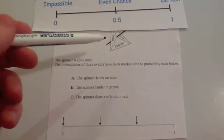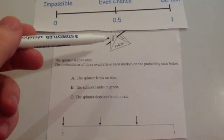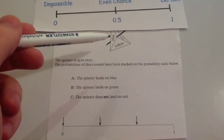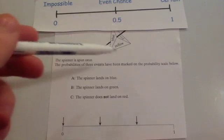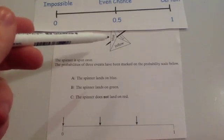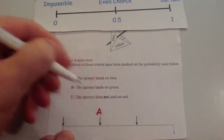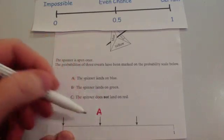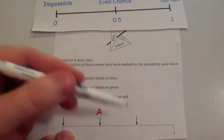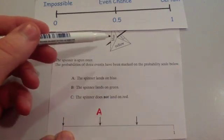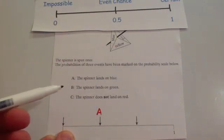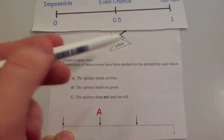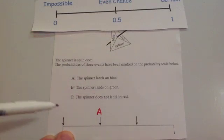The probability of landing on blue — there are three sections and blue is one of them, so the probability is 1 out of 3, or one third. One third is below 0.5, so it's unlikely. So A (lands on blue) is unlikely. B is the spinner landing on green — there's no green on the spinner, so that's impossible.